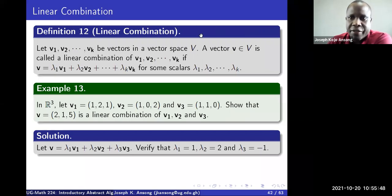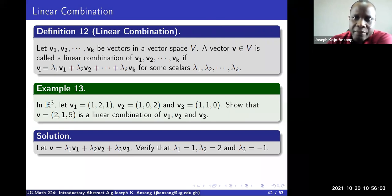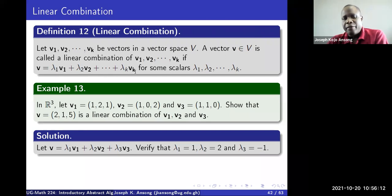You've probably come across this in linear algebra. If you let v1, v2, vk be vectors in a vector space V, a vector v in the set V is called a linear combination of these vectors if v is equal to the sum of these quantities: lambda 1 v1 plus lambda 2 v2,